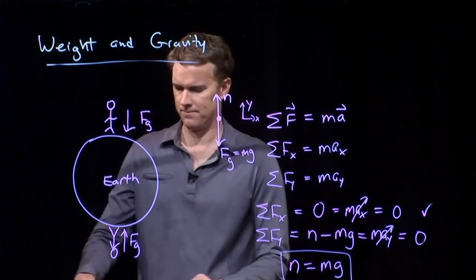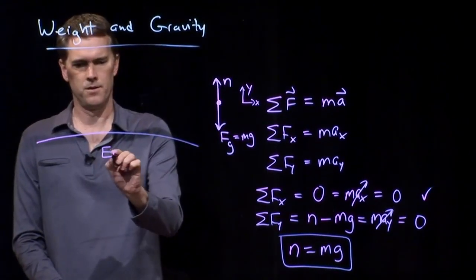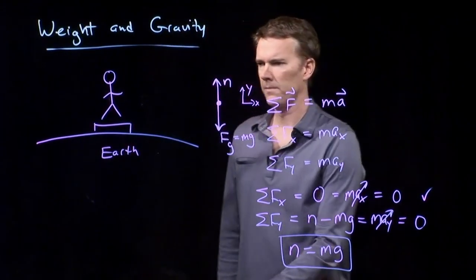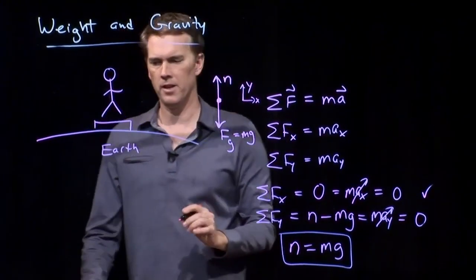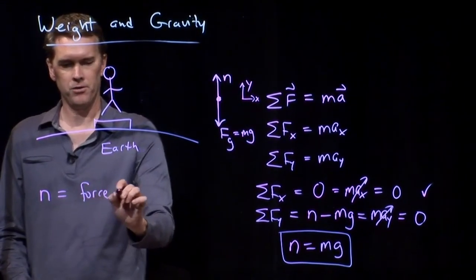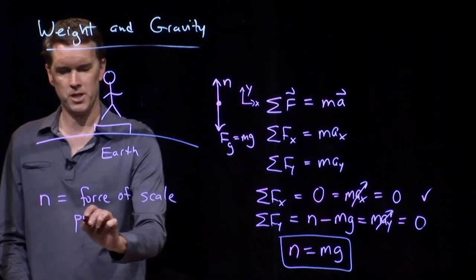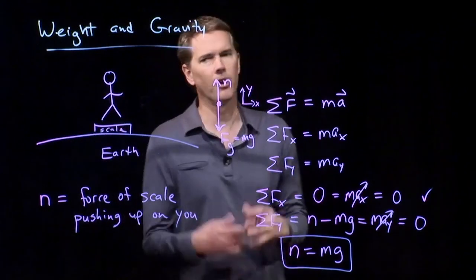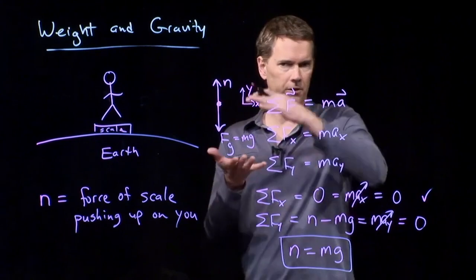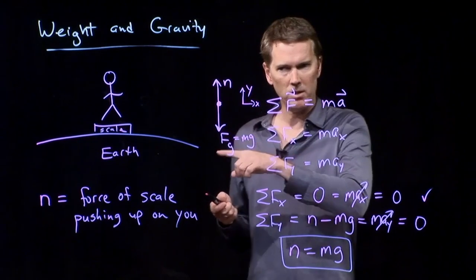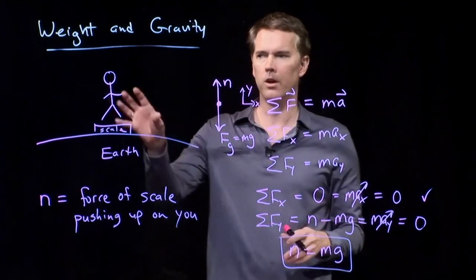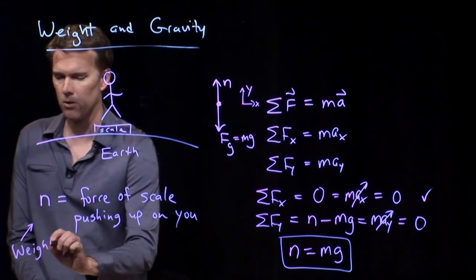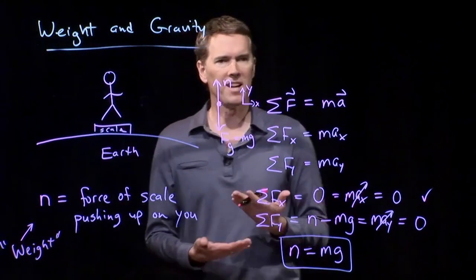How hard is the Earth pushing up on you? It's pushing up with your mass times gravity, 9.8 meters per second squared. But let's change the picture just slightly. Here's our Earth. Here is a scale. And you are going to stand on the scale. We can draw the exact same picture here. The only difference is this normal force, n, is the force of the scale pushing up on you. This is our scale right there. And you've all done this. You've all stood on a scale. What happens in a scale is there's a little spring that compresses. As it compresses, it rotates a needle that shows you different numbers. Those numbers correspond to your weight.